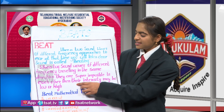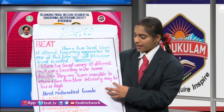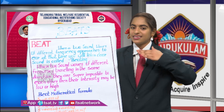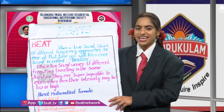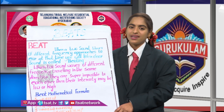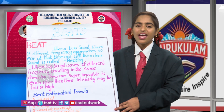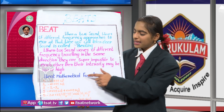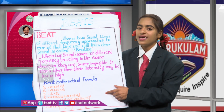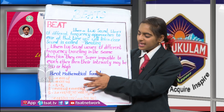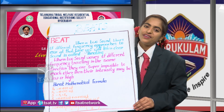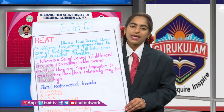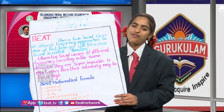When the waves interfere with each other, their intensities may be low or high. Destructive interference means the sound which has low frequency. Constructive interference means the sound which we listen with a high frequency. The beat mathematical formula: S equals 2A cos(ωA·T) · cos(ωB·T). That is the beat mathematical formula we have discussed.